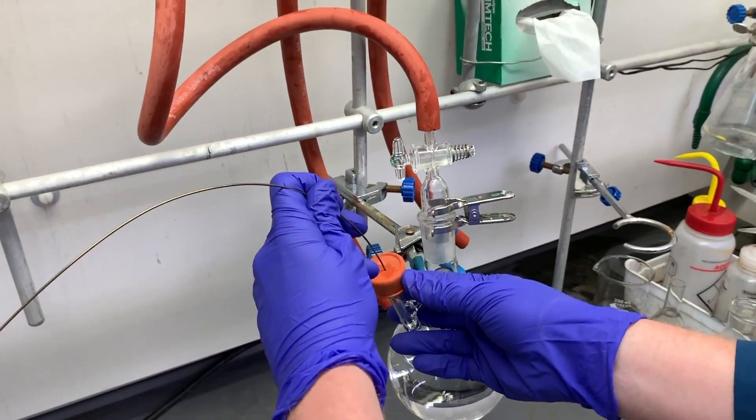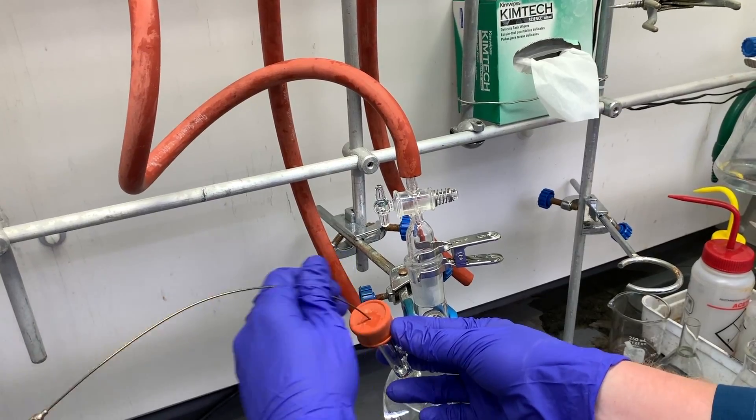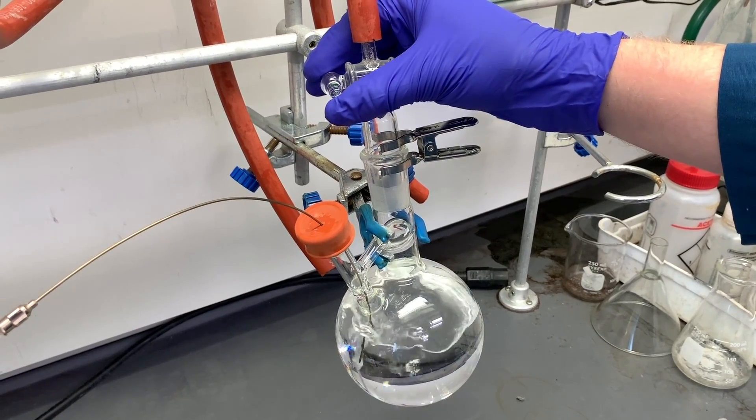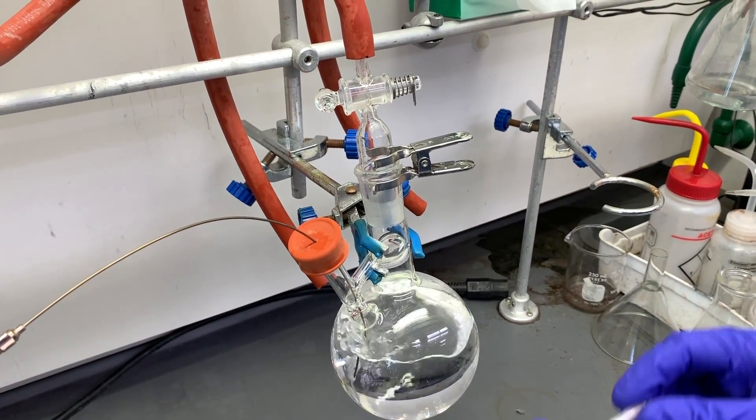With nitrogen flowing out of the long needle, insert it into the flask and below the surface of the liquid. You can close the flask's nitrogen inlet and insert a pressure relief needle to ensure a moderate flow of gas through the liquid.